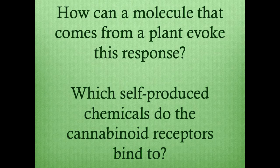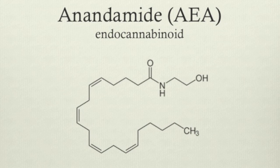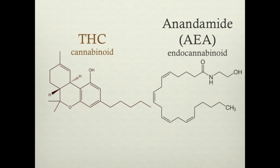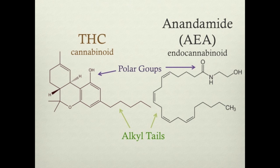It is astounding that tetrahydrocannabinol, a foreign chemical, has the ability to bind to these mammalian receptors so well. To better appreciate how this plant-produced chemical binds human receptors, we can compare THC's binding with that of an endogenous cannabinoid — that is, a cannabinoid produced naturally by our bodies. Anandamide, or AEA, is one of the most well-studied endocannabinoids. The structural similarities between THC and anandamide allow THC to act as an agonist for the same system; they both have hydrophobic alkyl tails and polar hydroxyl groups which allow them to interact with the cannabinoid receptors in a similar fashion.